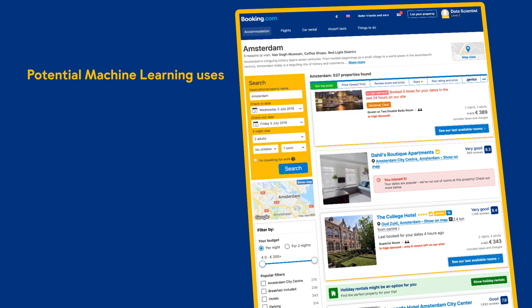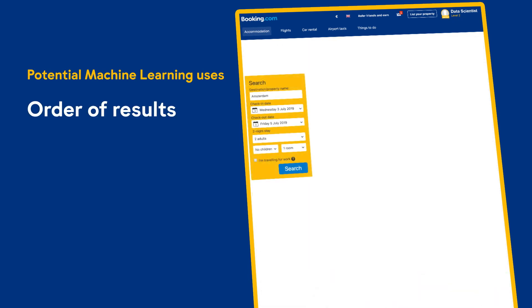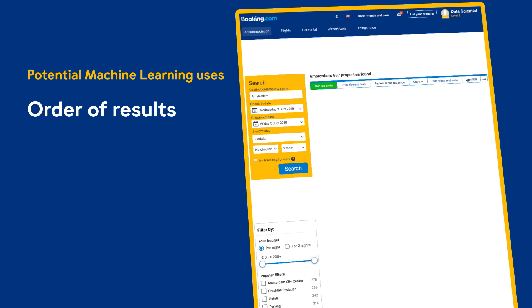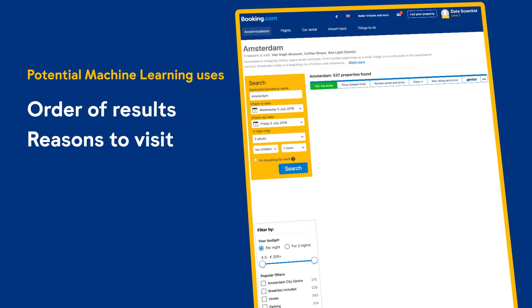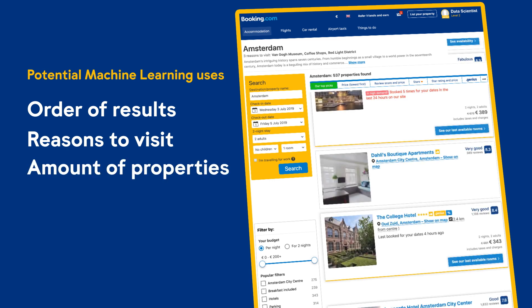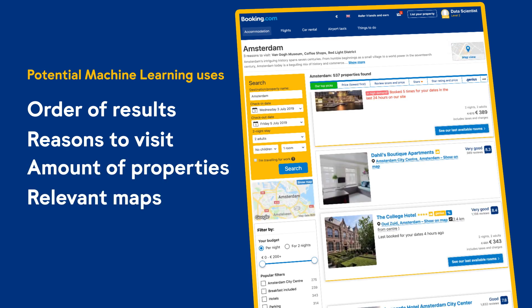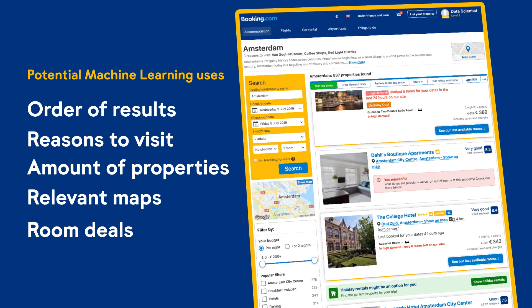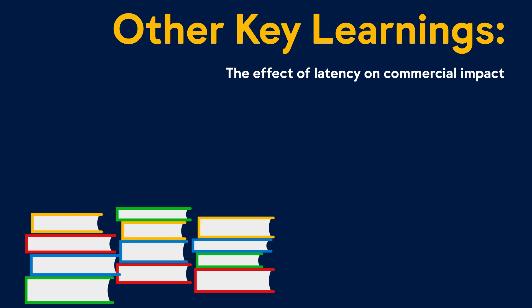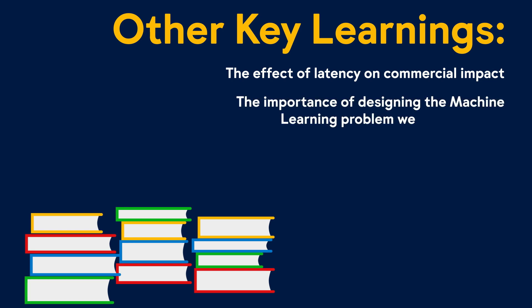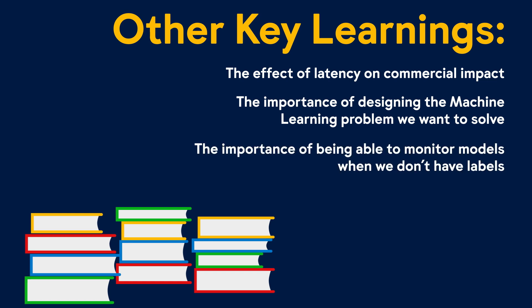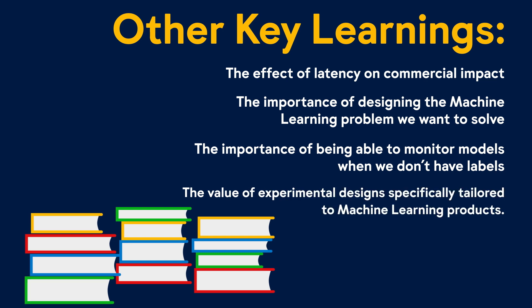We also discovered just how many potential use cases machine learning has. One obvious use is to decide the order of properties on the search results page. But we can also use machine learning to understand what Amsterdam or any other city is best known for, how many properties we should show, if a user would like to see a map, and if the price for a night at a particular property is a good deal or not. Other key learnings include the effect of latency on commercial impact, the importance of designing the machine learning problem we want to solve, the importance of monitoring models when we don't have labels, and the value of experimental design specifically tailored to machine learning products.